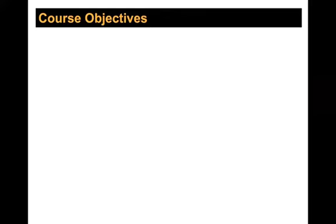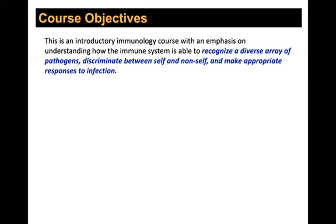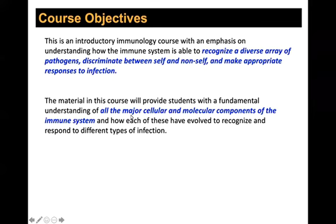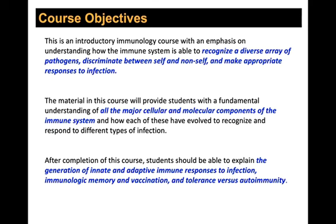The course objectives: when you complete this course, I expect you to understand how the immune system is able to recognize virtually anything that comes into it, tell the difference between you and what is attacking you, and how it makes an appropriate response to infection. We'll cover all the major cellular and molecular components of the immune system. I'm looking for students to know how you generate adaptive and innate responses, what is the basis of immunological memory, what vaccination does to modify that, and how we maintain tolerance versus what Ehrlich described as horror autotoxicus — an auto-toxic response.